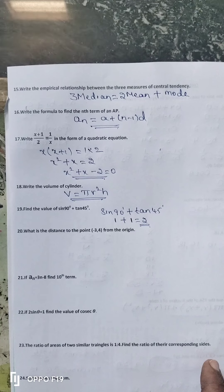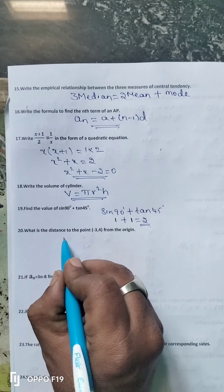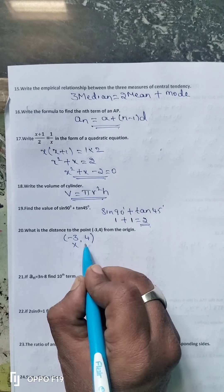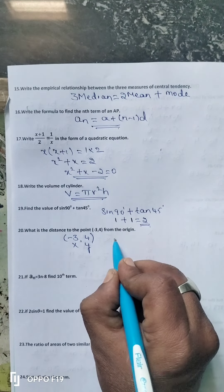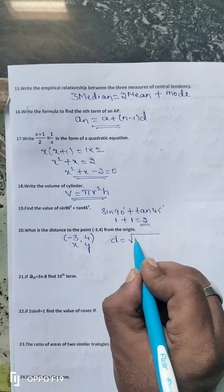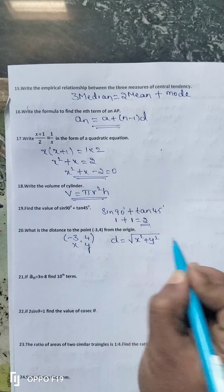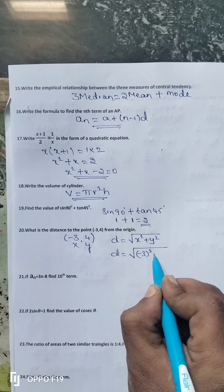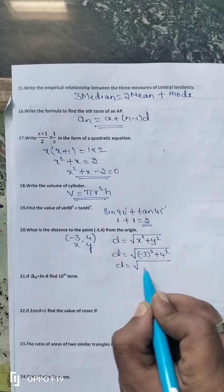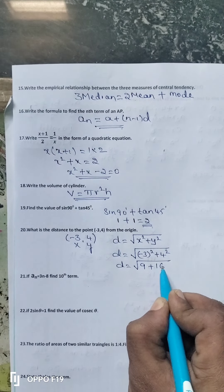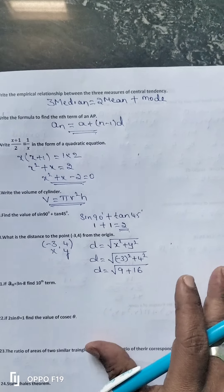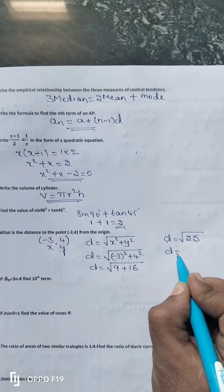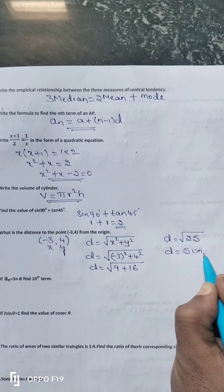The 20th question: What is the distance to the point (−3, 4) from the origin? Here x is −3 and y is 4. The distance formula is d equals square root of x squared plus y squared. So d equals square root of (−3)² plus 4², which is square root of 9 plus 16, which is square root of 25, giving d equal to 5 units.